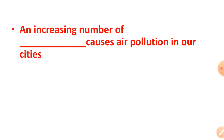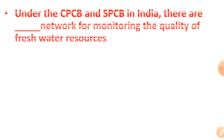An increasing number of dash causes air pollution in our cities — the right answer is vehicles. Under the CPCB and SPCB in India there are dash networks for monitoring the quality of fresh water resources — the right answer is 507.